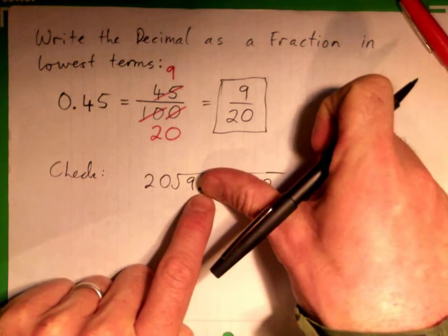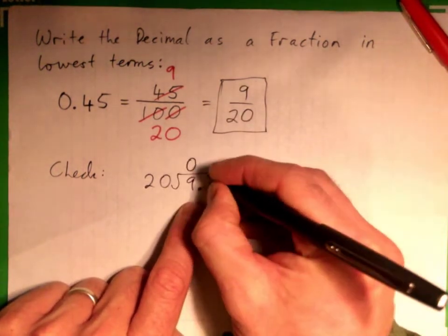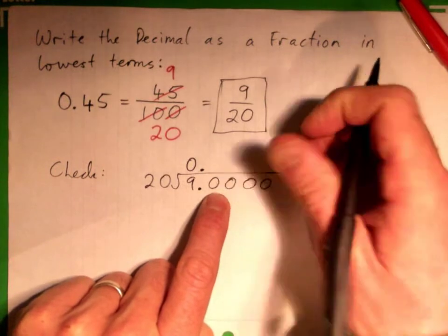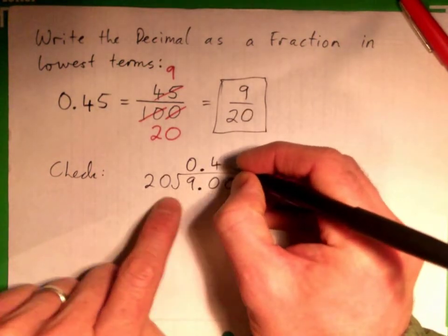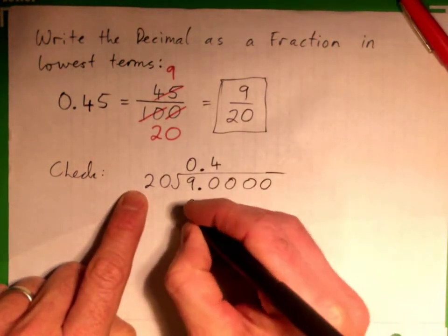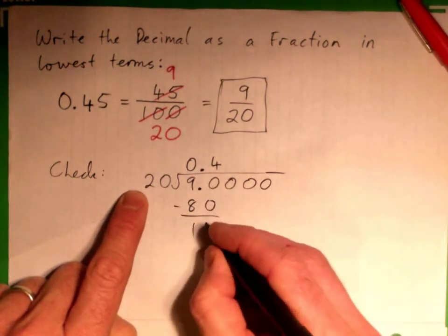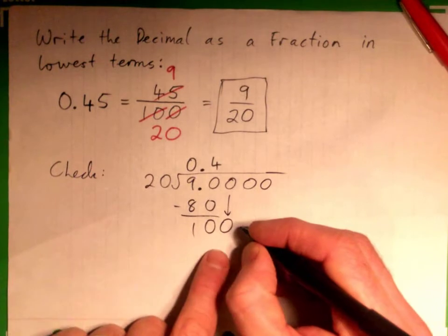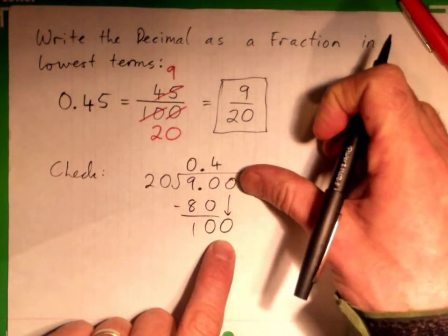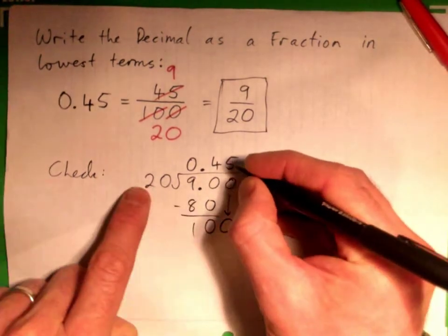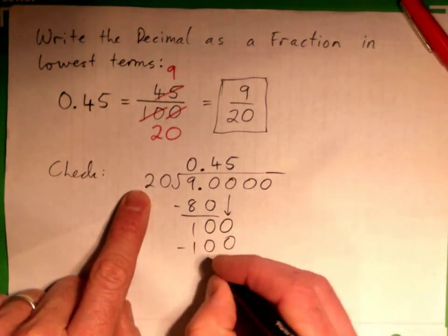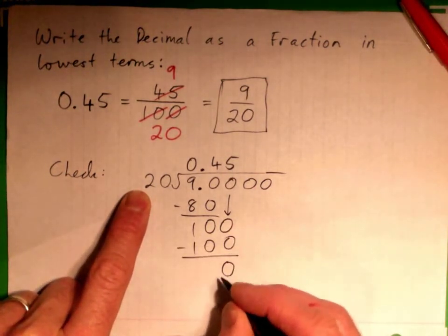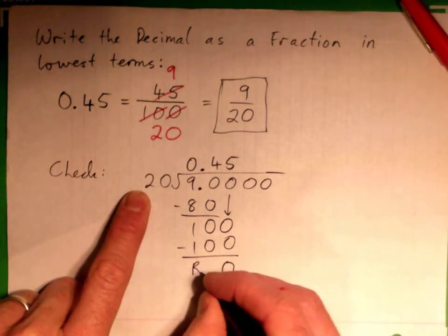I would go 20 into 9, go 0 times, bring this decimal point up. Now 20 into 90 goes 4 times. 4 20s is 80. 90 subtract 80 is 10. Bring a 0 down. 20 into 100? 5 times. 5 times 20, 100. Subtract. And remainder is? Remainder is 0.